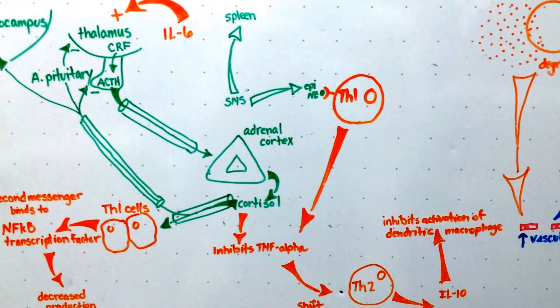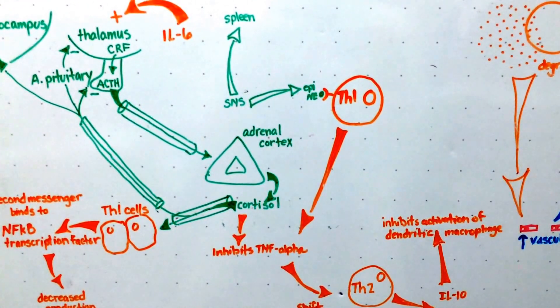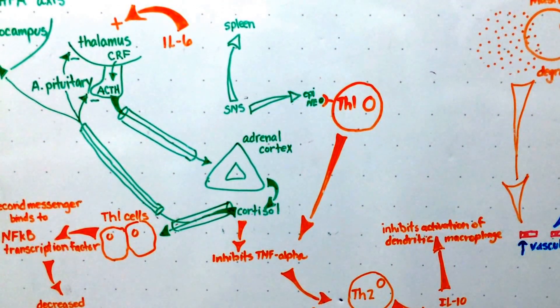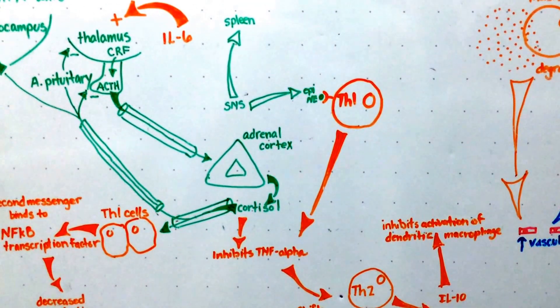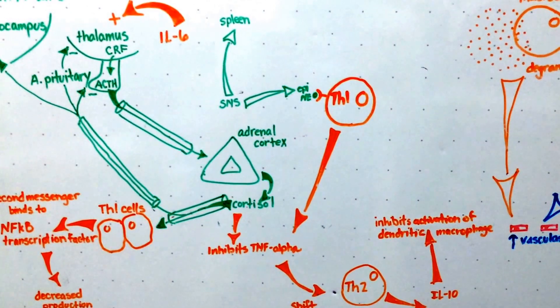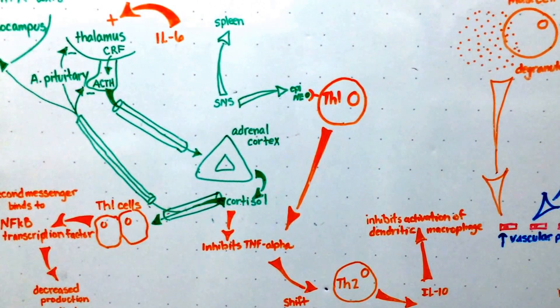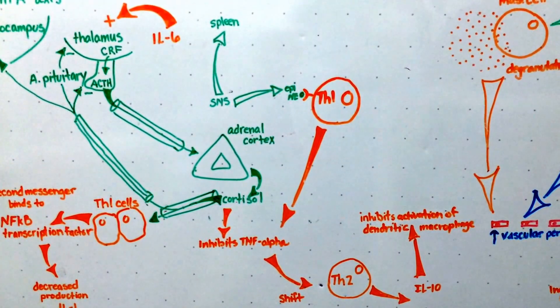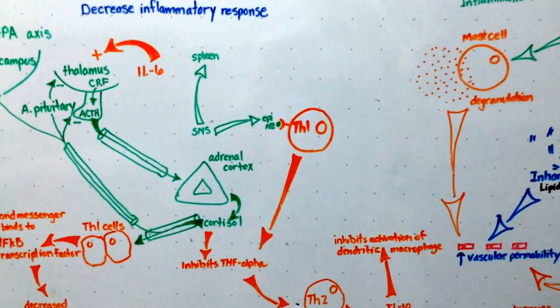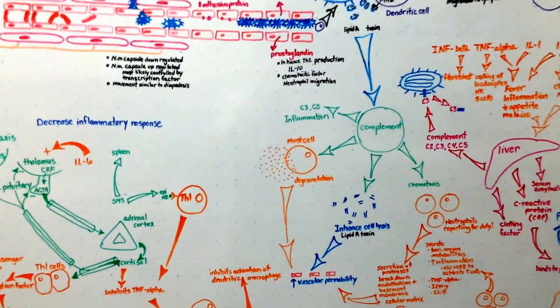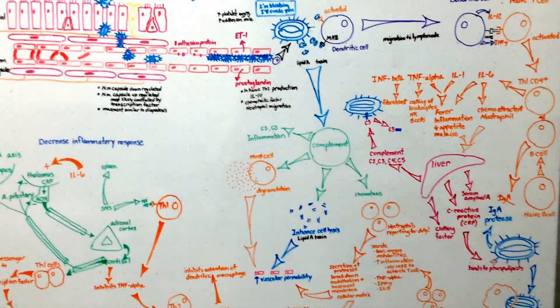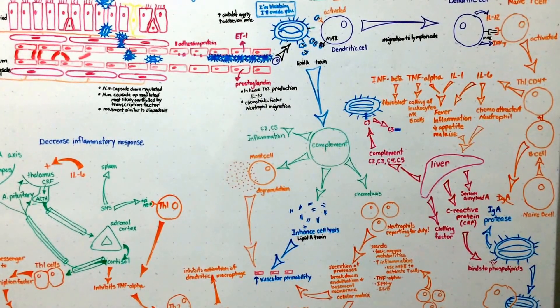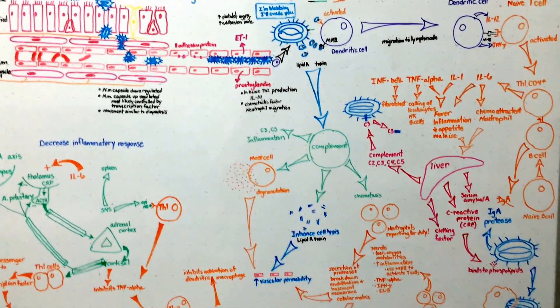So we have a shift that we discussed as we shift from Th1 cells to Th2 cells in this inflammatory process. This whole process is a cycle of inflammation and vascular permeability that spirals down and forward.